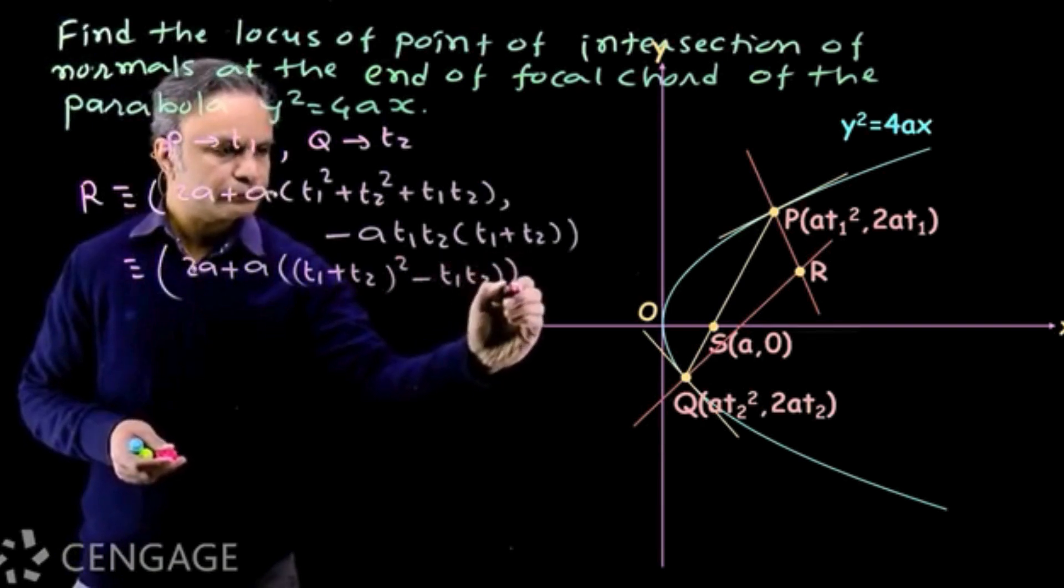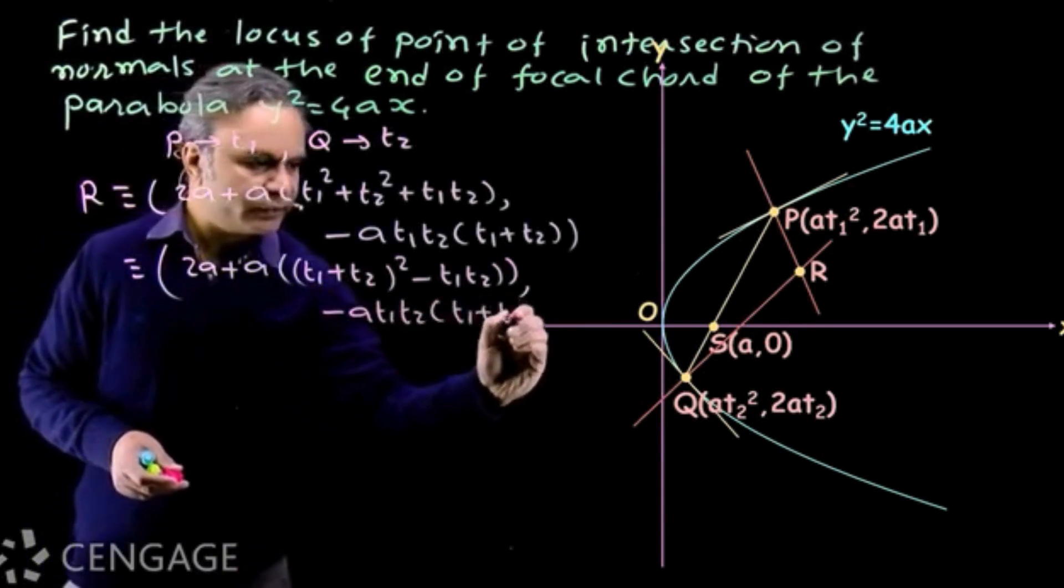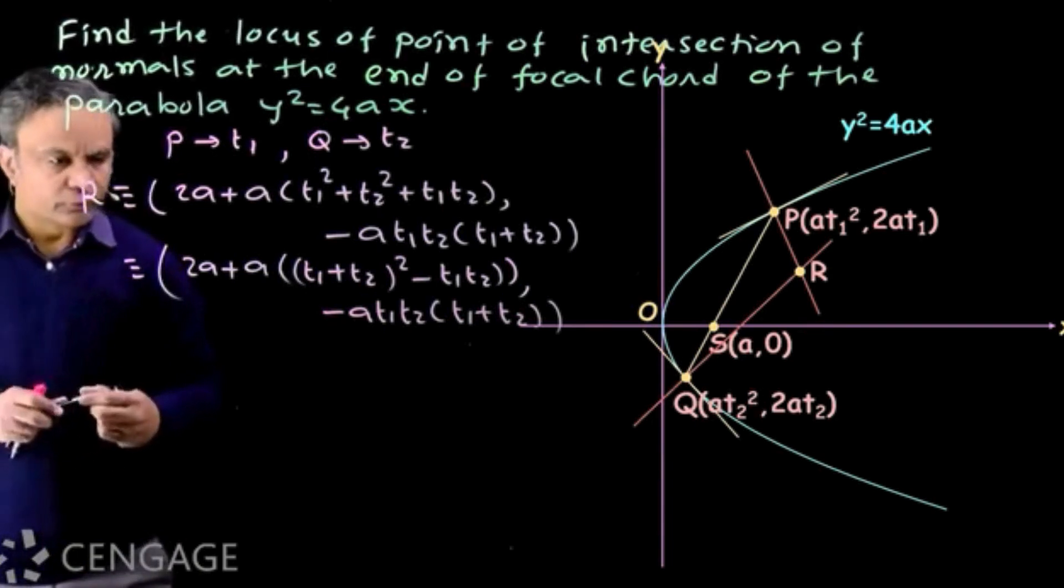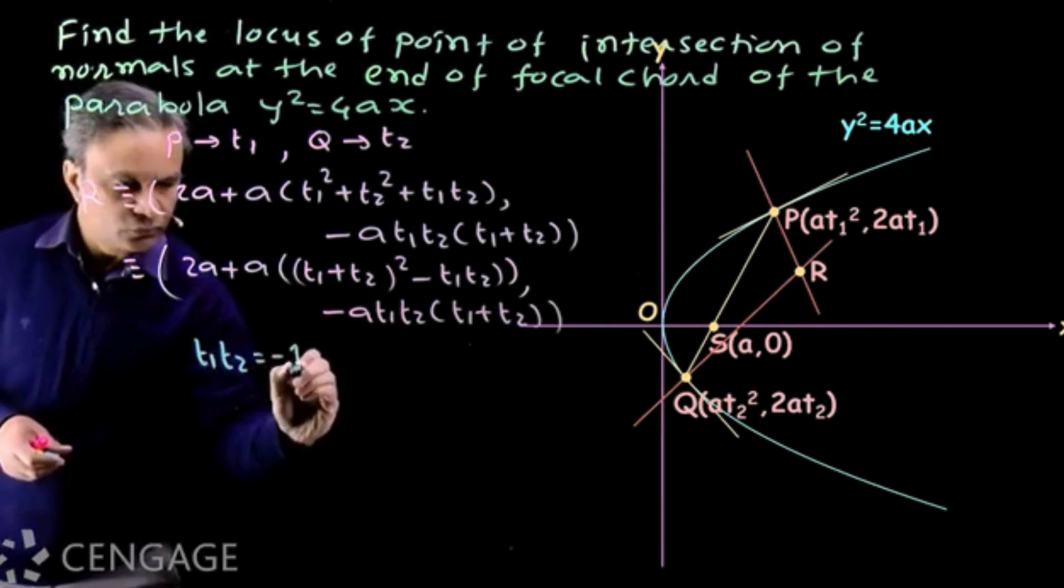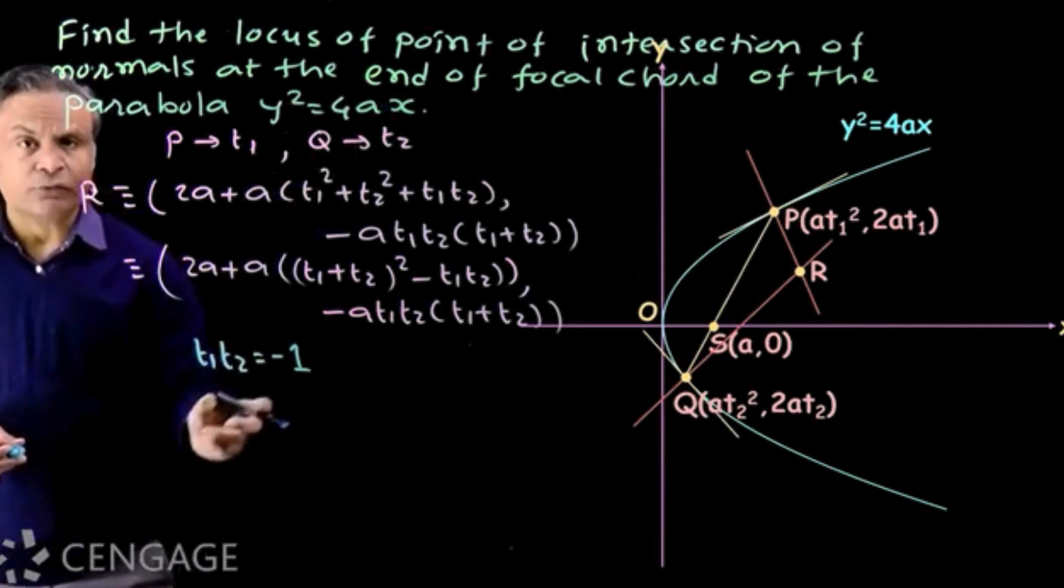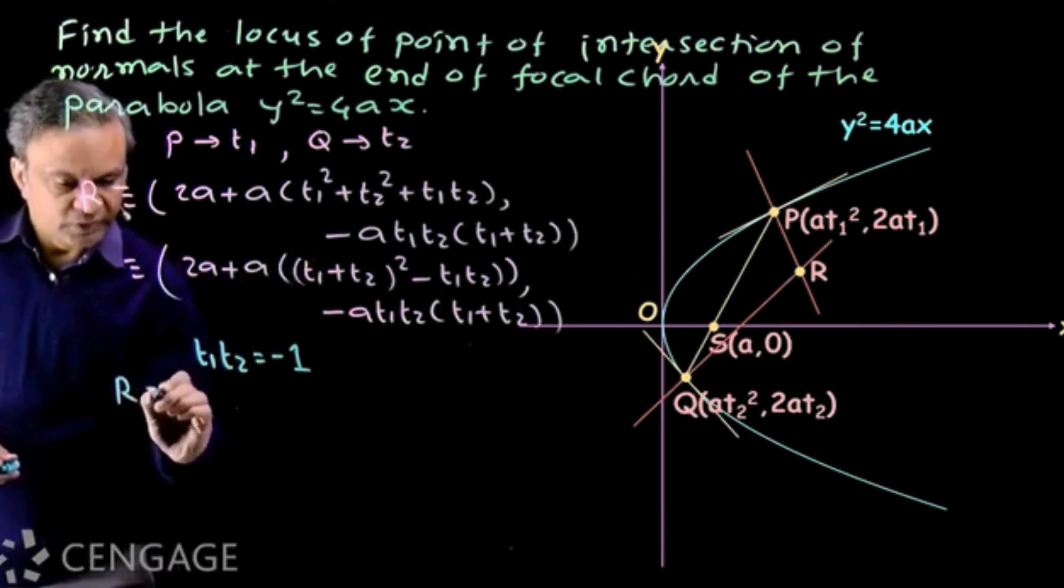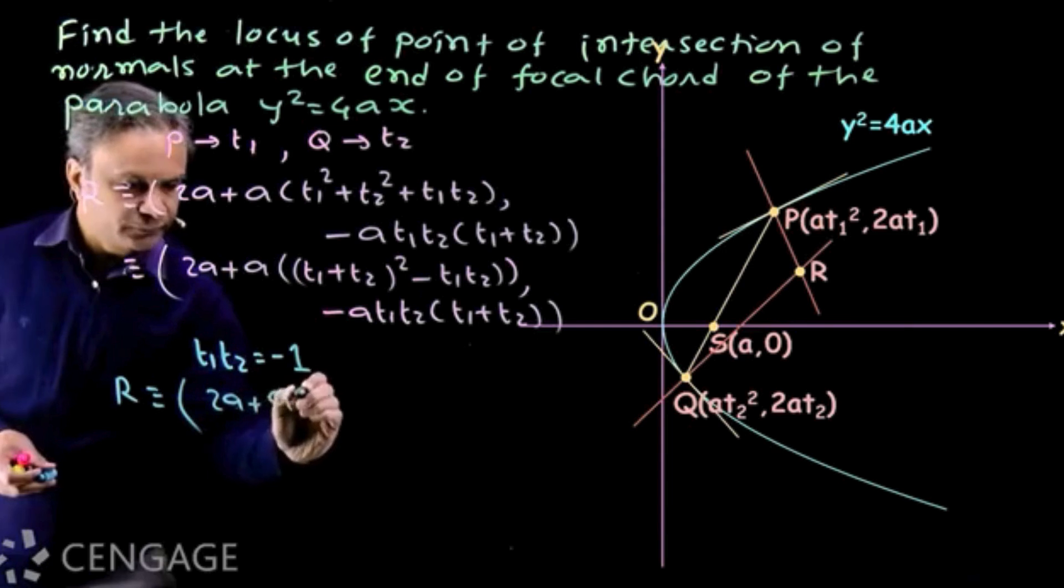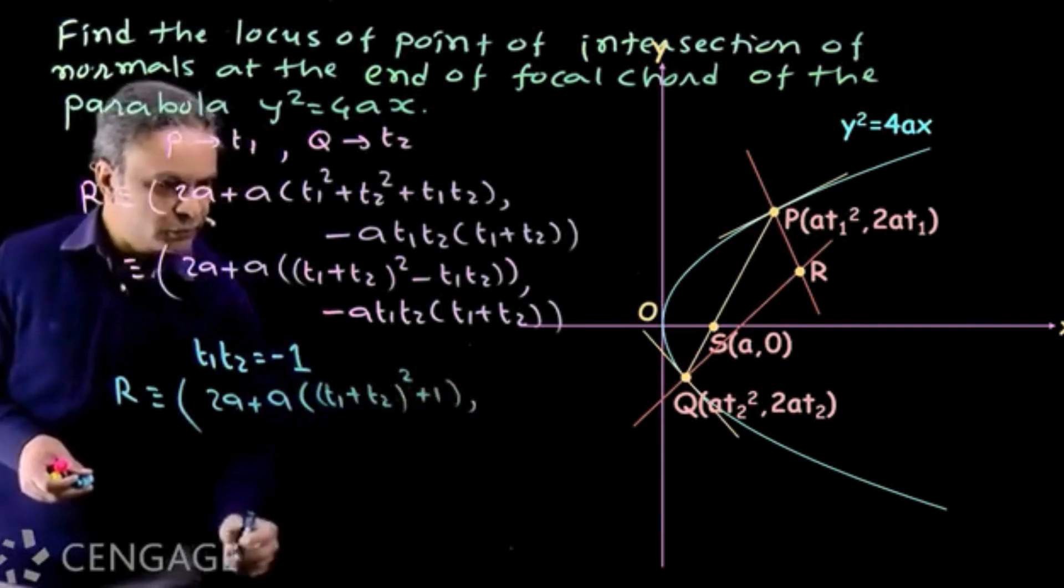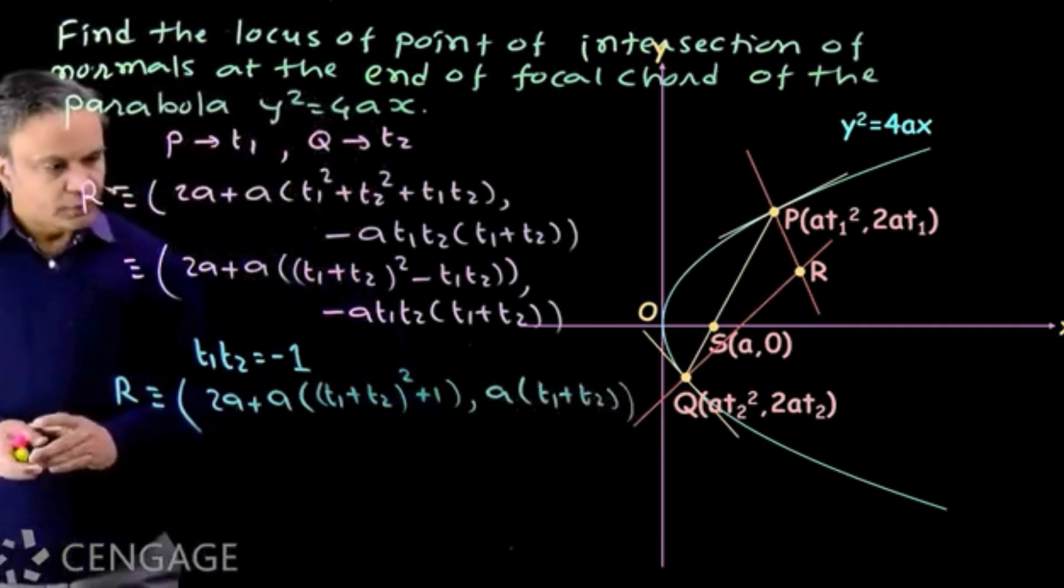Now PQ is focal chord and for focal chord we know that t1 t2 is equal to minus 1. So t2 is minus 1 upon t1. We substitute this: 2a plus a multiply by t1 plus t2 whole squared minus minus 1, comma a multiply by t1 plus t2.